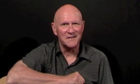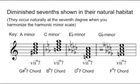So let's start by looking at these four diminished seventh chords shown here in their natural habitat. By that I mean I've shown the four diminished seventh chords that occur on the seventh degree of the harmonic minor scales in the keys of A minor, C minor, E flat minor, and G flat minor.